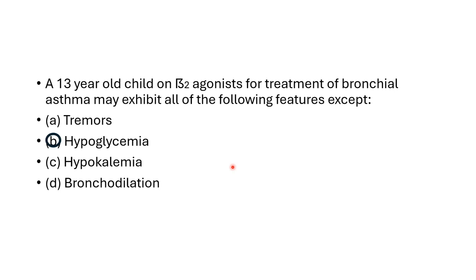The answer is hypoglycemia. Tremors are a dose-related adverse effect of beta-2 agonists. Hyperkalemia followed by hypokalemia is an important adverse effect of beta-2 agonists. Bronchodilation occurs due to beta-2 agonist activity, which is the therapeutic use of beta-2 agonists in bronchial asthma.